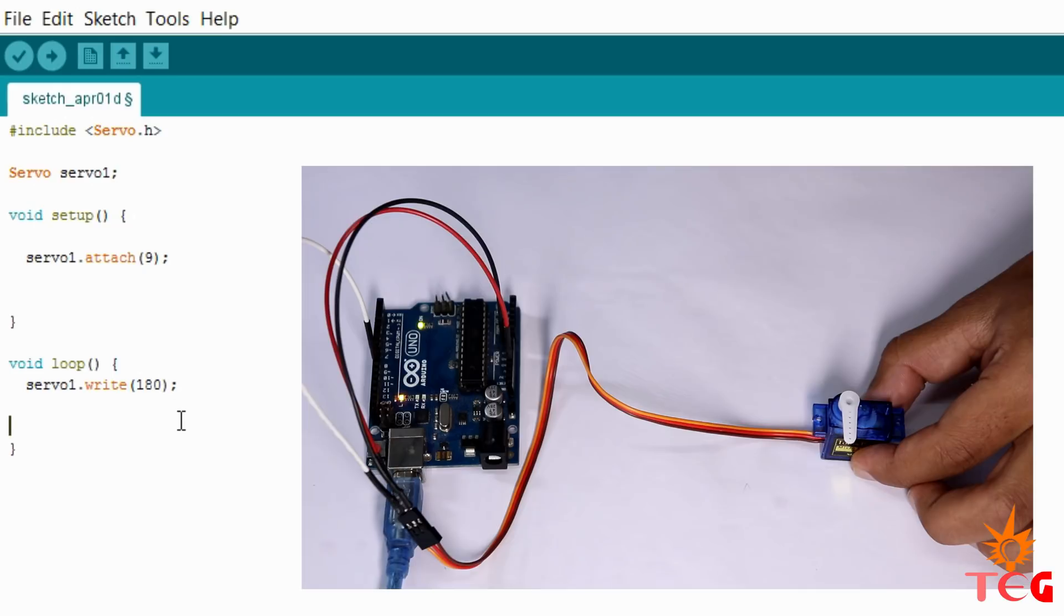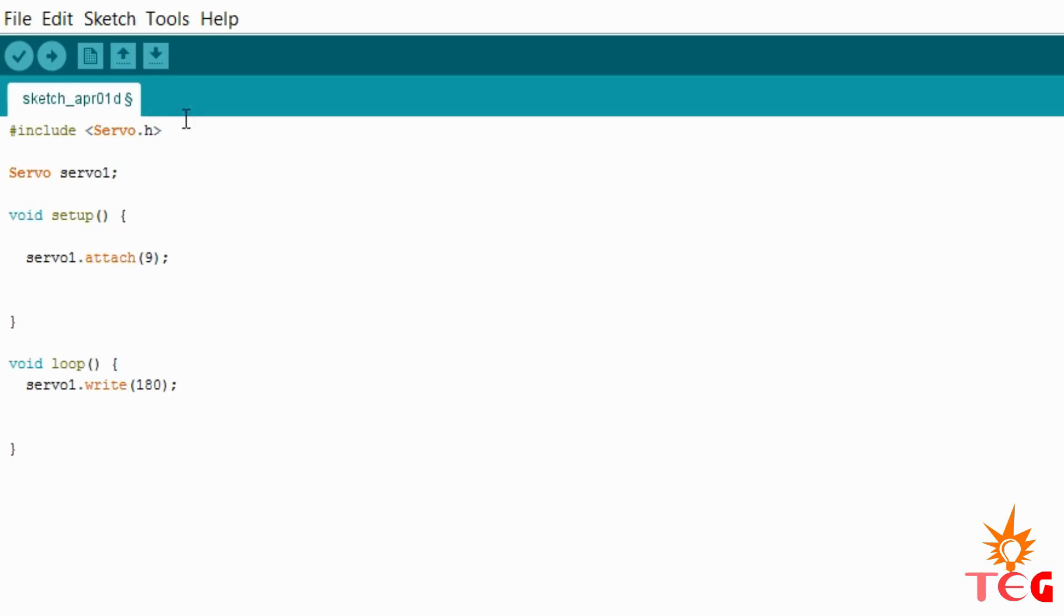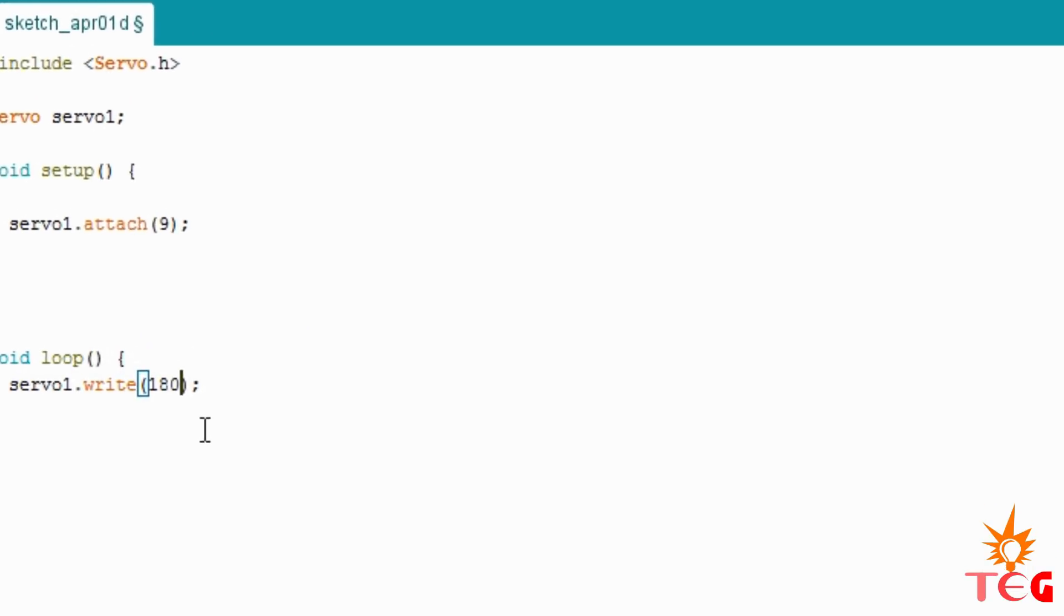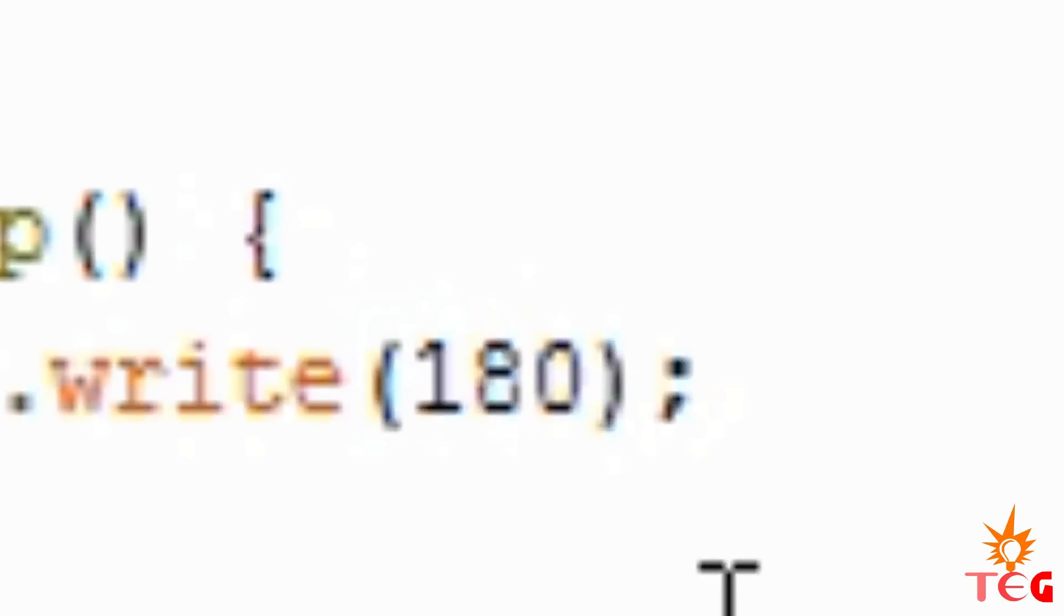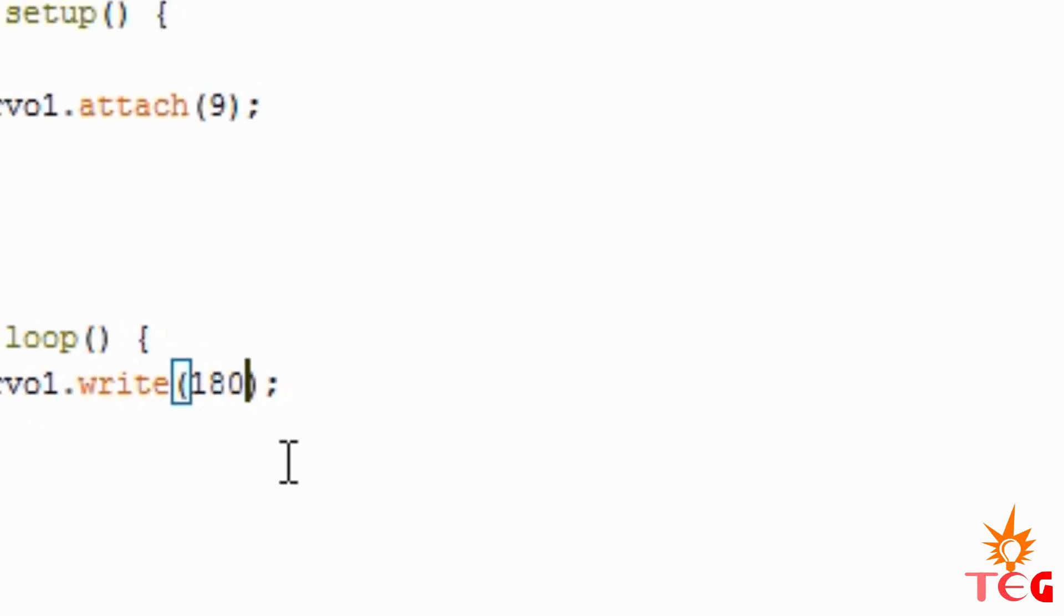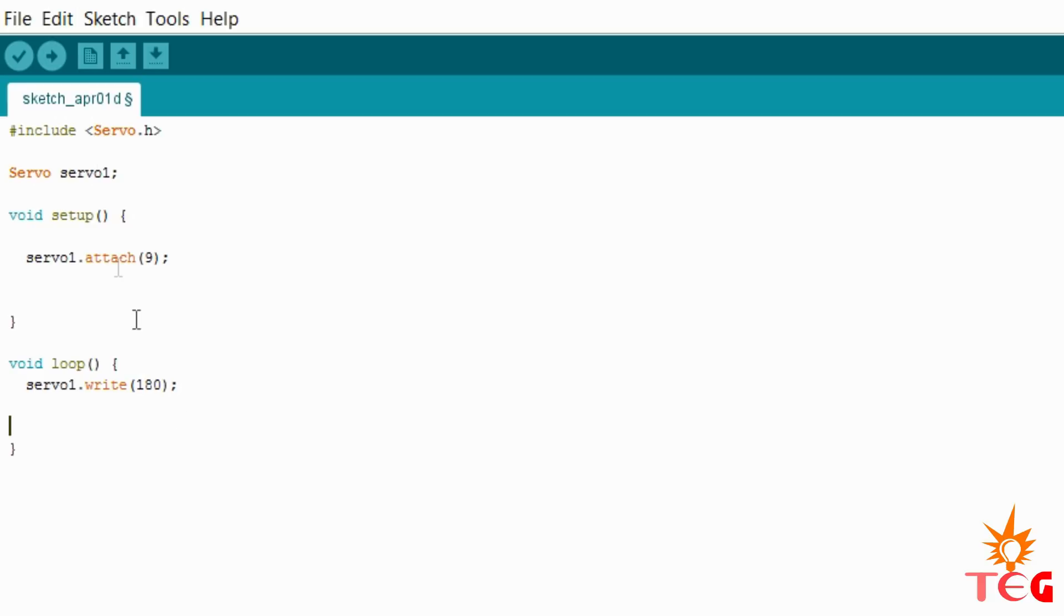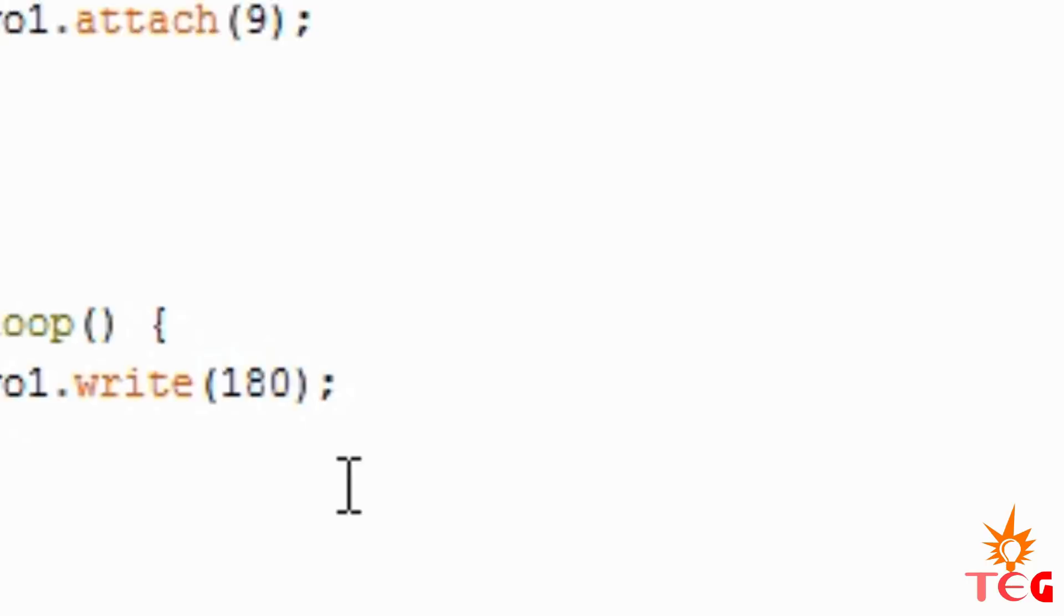So here, this is 180 degree position of the servo motor. So if you want your servo motor to any other degree position, then just define the degree inside this bracket. For example, if you want your servo motor to be in 15 degree position, then just type 15 here and motor will automatically rotate to 15 degree position.